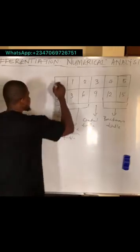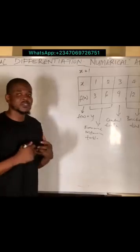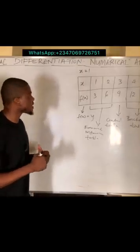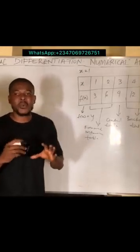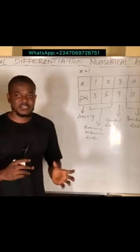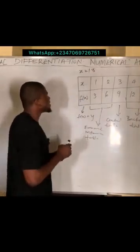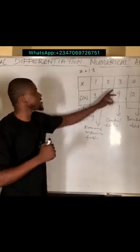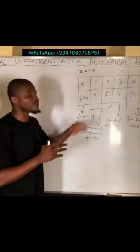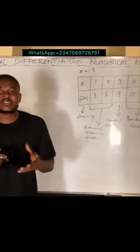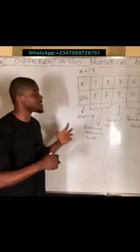Let's say we are asked to approximate the derivative when x is equal to one. Since one is directly at the forward of the table, we are going to use the forward difference method to approximate that derivative. Similarly, if x is 1.5, the highest value of the forward table ends at two, so 1.5 still lies between one and two — we still use the forward difference method.